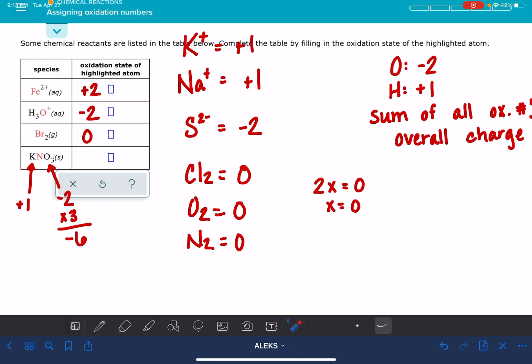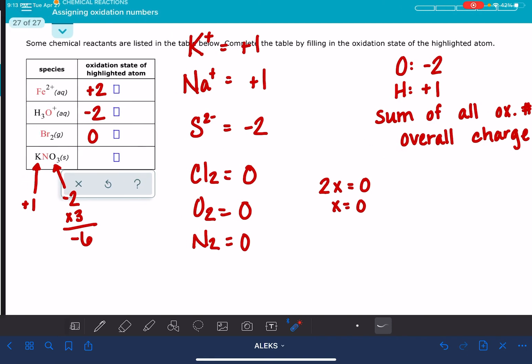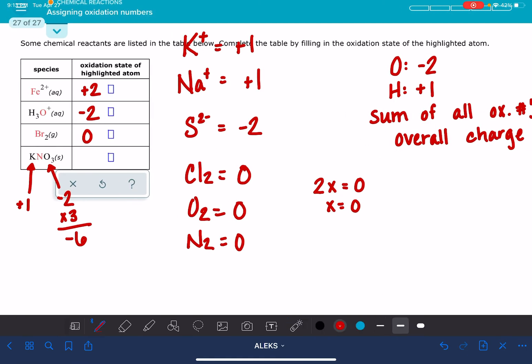And then the rules tell us that the sum of all the oxidation numbers has to add up to the overall charge. So whatever the oxidation number is for the nitrogen atom, plus one for the potassium and minus six for all three of those oxygen atoms together, and the oxidation number of this nitrogen has to add up to zero, which is the overall charge for this particular compound. So we can do some clever math here and we can figure out that the oxidation number on the nitrogen atom has to equal plus five in order for this whole thing to work out to a zero.